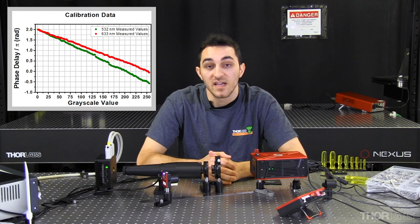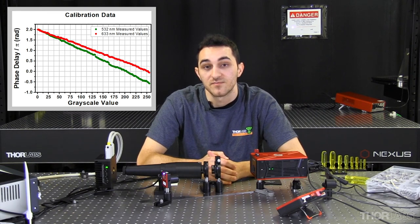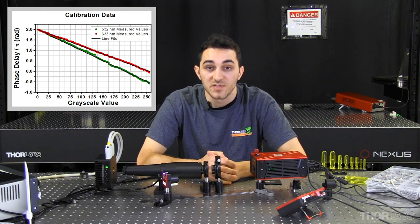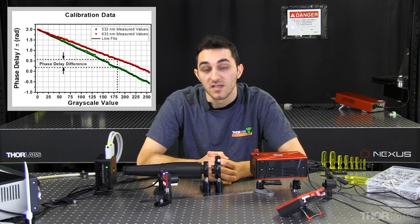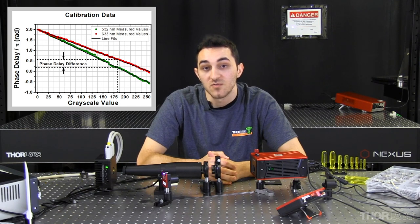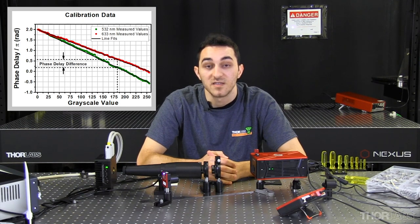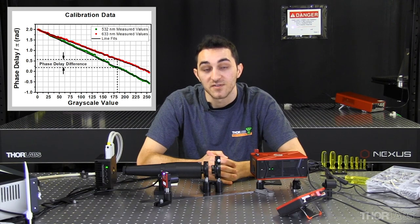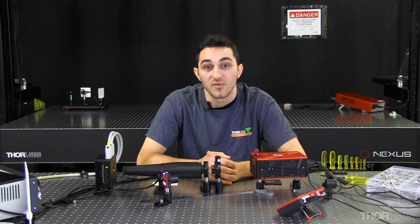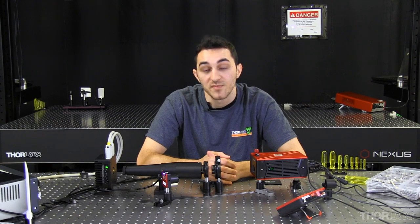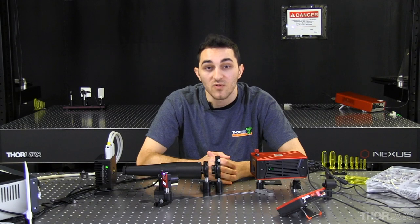I have previously calibrated this setup for a 633 nanometer laser. The biggest difference between these two curves is their slope. This means that for the same grayscale value, a pixel will provide a different phase delay depending on the wavelength of your laser. This example demonstrates how the performance of an SLM can change based on the operating conditions, and emphasizes why it may be important to calibrate an SLM to your setup.